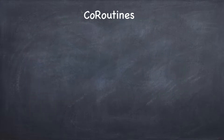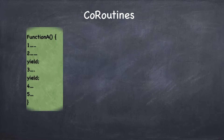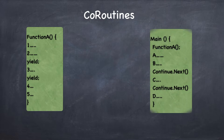Now what are coroutines and what is different here? Let's say I have a function A which does steps 1, 2, 3, 4, and 5. But between 1 and 2 there is something called yield, and between 2 and 3 there is yield, and between 3 and 4 there is yield. What does that mean? Let's see.